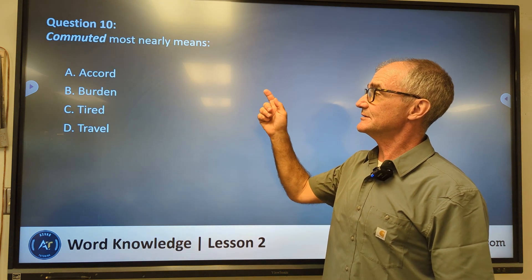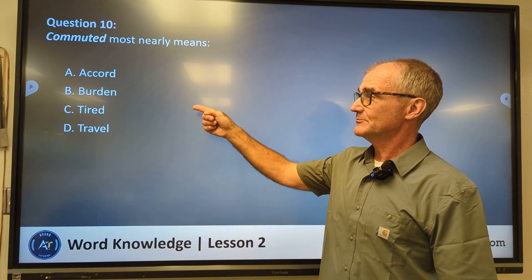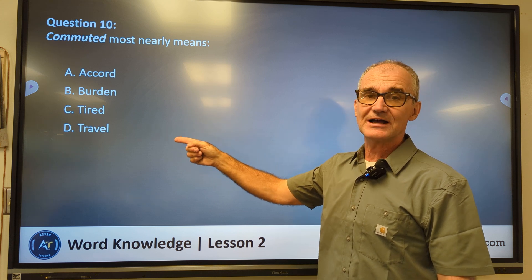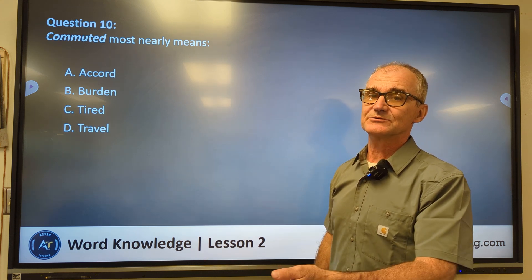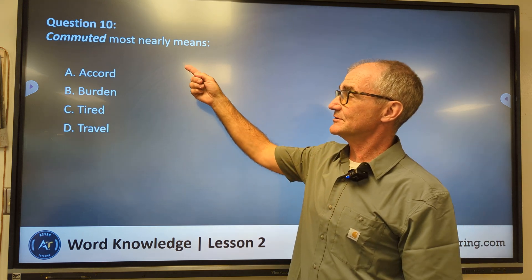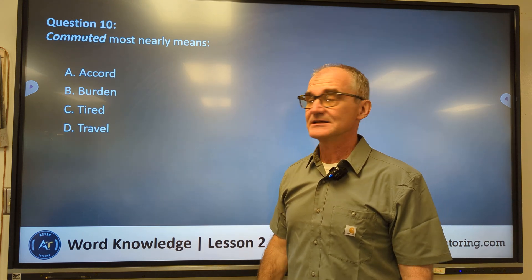Number ten, commuted most nearly means accord, burden, tired, travel. Well, if you commute to work, you are traveling to work. So correct answer for commuted is answer D, travel.